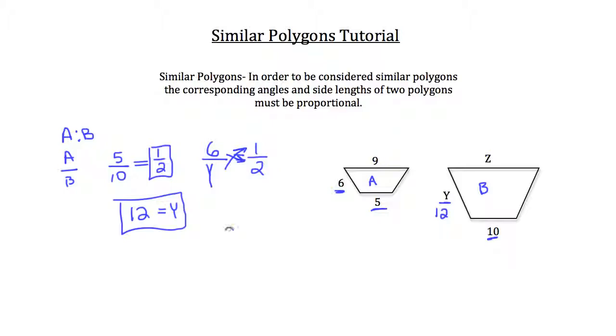So, we'll compare the smaller trapezoid A to the larger trapezoid B, using the proportion that we know that establishes that these two are similar. Now, you can only use this proportion if you were told in the problem that the trapezoids were similar to begin with. You could use it to solve for the missing variables, Y and Z.